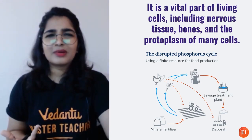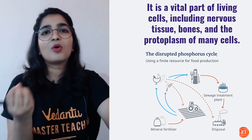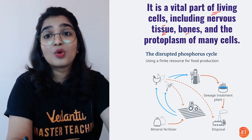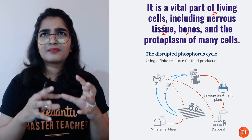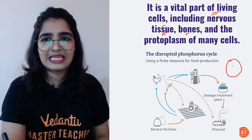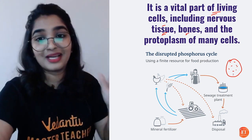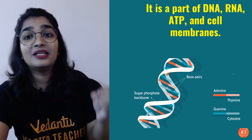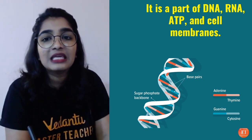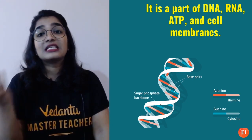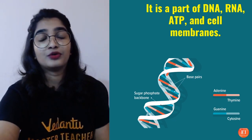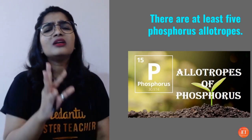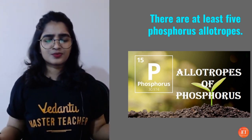As you may have learned in biology, phosphorus is a vital part of living cells, including nervous tissues, bones, and the protoplasm of many cells. It is a major part of DNA, RNA, ATP (adenosine triphosphate), and the cell membrane. The phosphate bonds you see in these molecules all contain phosphorus.